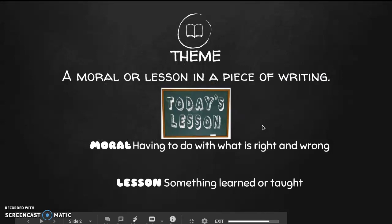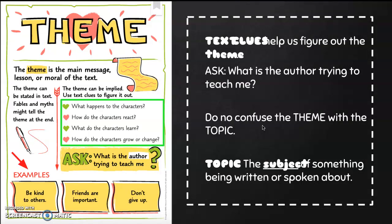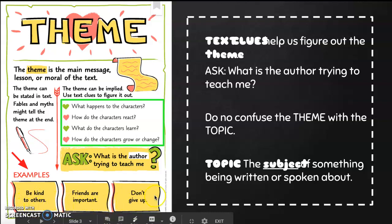Theme, you may remember, is a moral or a lesson in a piece of writing. A moral has to do with what is right or wrong, whereas a lesson is something that is learned or taught. When we want to find the theme, we're going to use text clues to help us figure out the theme. Think about what the author is trying to teach me. Do not confuse a theme with a topic — remember, topic means the subject that is being written or spoken about. Some examples of theme are: be kind to others, friends are important, and don't give up.